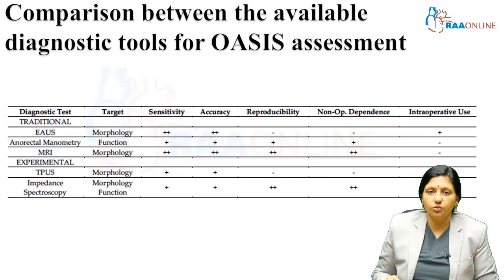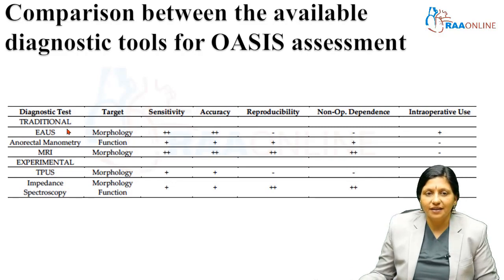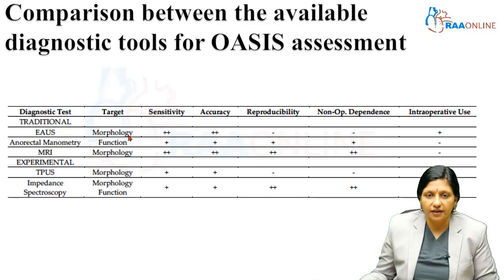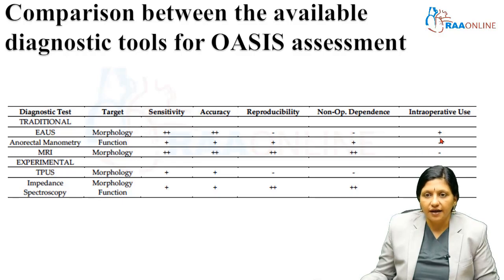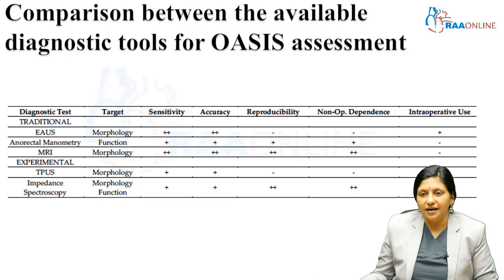There are various diagnostic tools for the obstetrical anal sphincter assessment. We include the traditional methods of just doing a per rectal examination. We have the endoanal ultrasound, which looks at the morphology of the sphincter. It has good sensitivity and accuracy, but it doesn't have reproducibility or non-operator dependence, and intraoperative use can be done with an endoanal ultrasound.